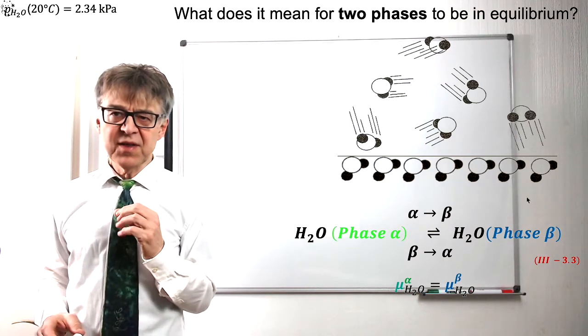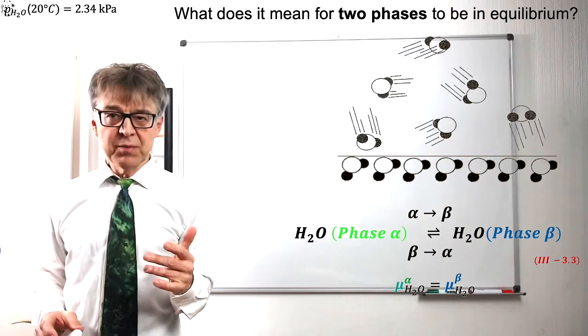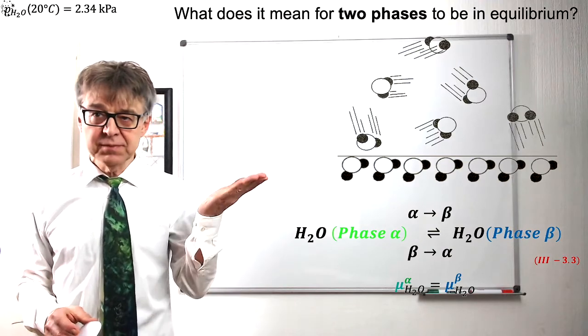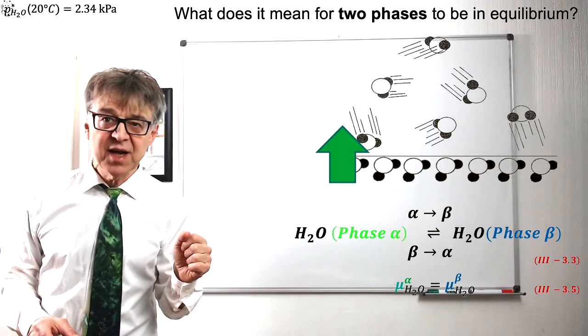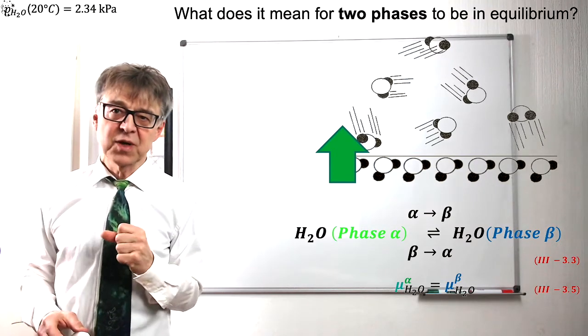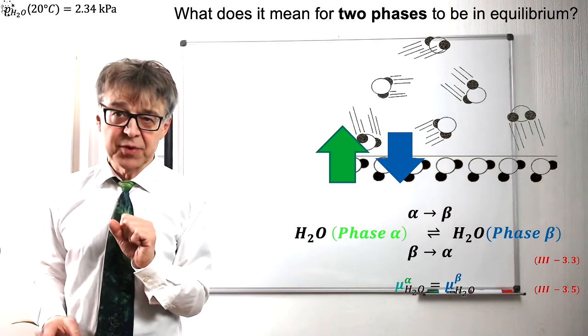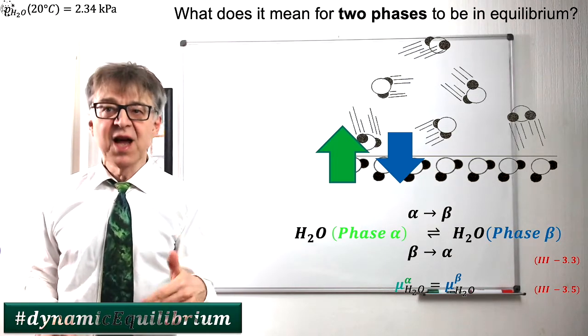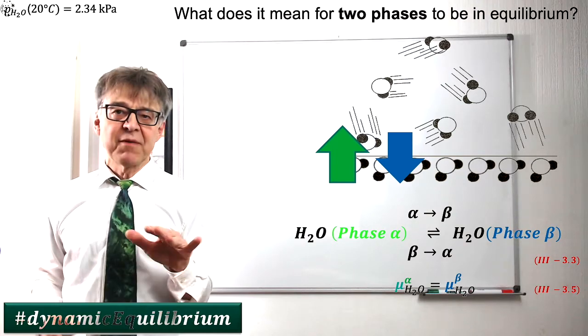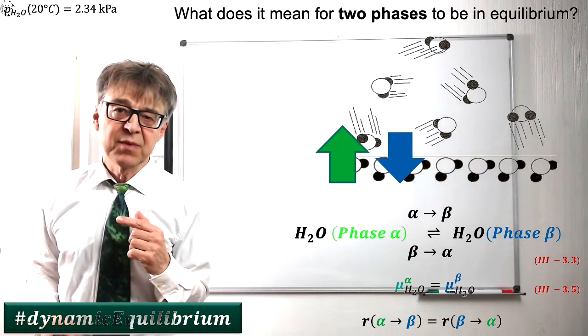We can also consider the question kinetically. There is equilibrium if the rate of evaporation, shown here in green color, is the same as the rate of condensation, shown here in blue color. We have a so-called dynamic equilibrium. Nothing happens macroscopically, but microscopically we have a forward and reverse process taking place at the same rates.